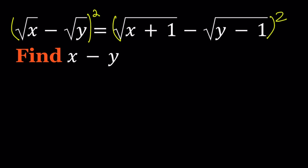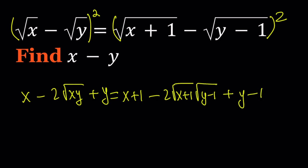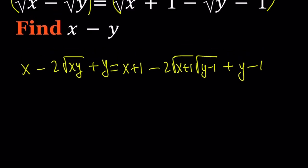We have (a - b)² being squared, so it's going to be x - 2√(xy) + y = (x+1) - 2√((x+1)(y-1)) + (y-1). We get rid of lots of different radicals here and we can also simplify this.